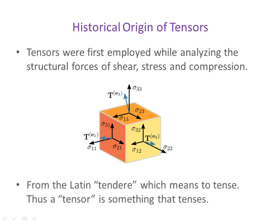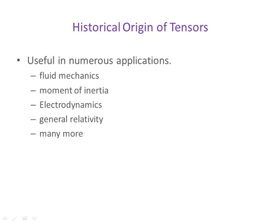Well, tensor is of Latin origin. It comes from a word that means to tense. Thus, a tensor is something or someone that tenses. Well, since the original origin, we've found that tensors are quite valuable in a number of fields of science. They are useful in fluid mechanics, moment of inertia, electrodynamics, general relativity, and many more applications.